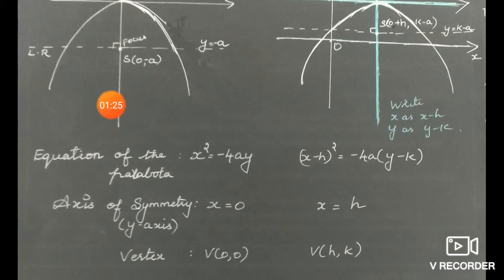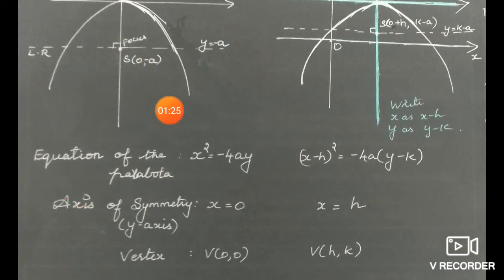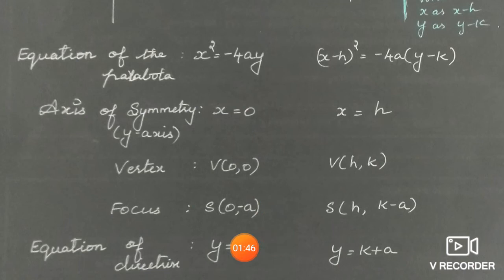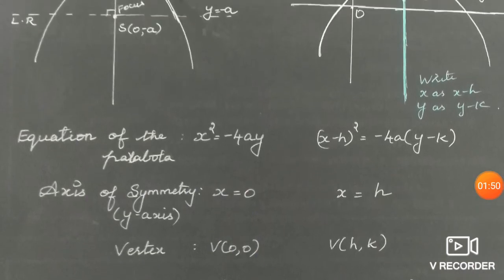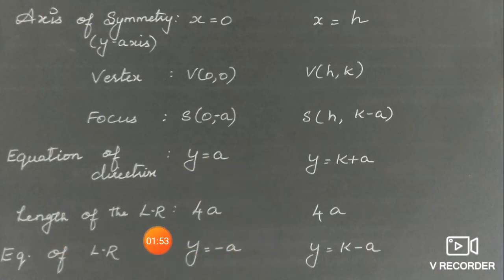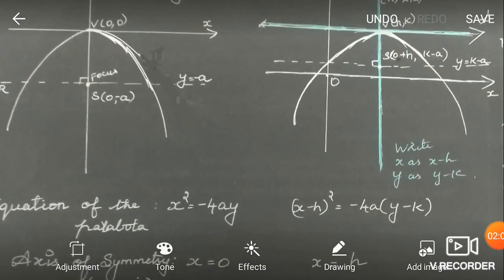The axis of symmetry is the y-axis. The equation of the axis of symmetry is x equal to 0. The equation of the parabola is x squared equal to minus 4a times y. Vertex is (0, 0), focus is (0, -a), directrix is y equal to a, length of the latus rectum is always 4a, and equation of the latus rectum is y equal to minus a.